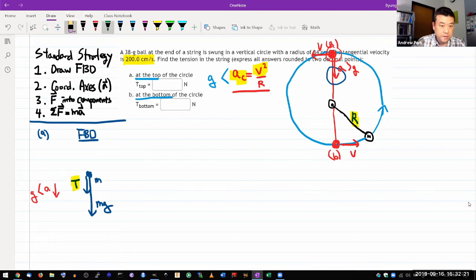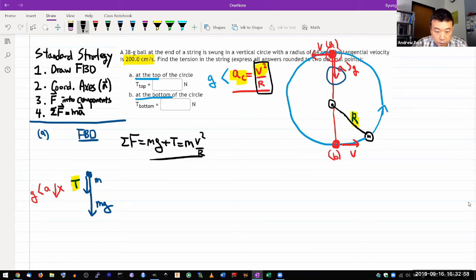So, coordinate axis - let's say this downward direction is positive x. Components - no components, it's all along positive x. Let me write Newton's second law equations. So net force is equal to the sum of the two forces: mg plus T is equal to mass times acceleration. And here I happen to know what the formula for acceleration is, so let me write it down: V squared over r. So that's it. I guess I have one equation and one unknown. I can solve for that one unknown.